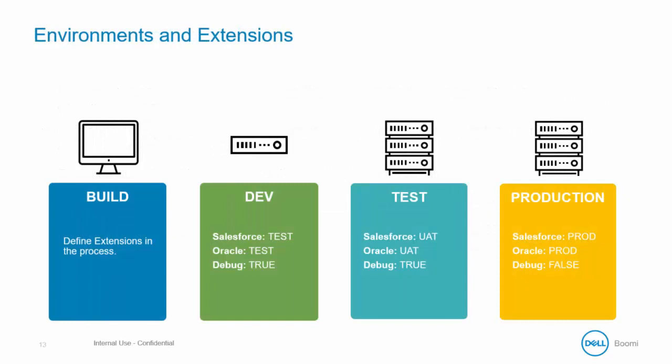Revisiting the illustration with a focus on extensions: in the build tab, developers create a process with certain properties that can be extended and overwritten in each environment, and you can also do connectivity testing there. In the dev environment, Salesforce and Oracle connections go to a test data source, and a process property such as a debug flag might be set to true. In the test environment, extensions point to a different Salesforce and Oracle endpoint — we are not editing the process but defining values through extensions. Lastly, the production environment utilizes extensions to point to the production endpoints of Salesforce and Oracle.